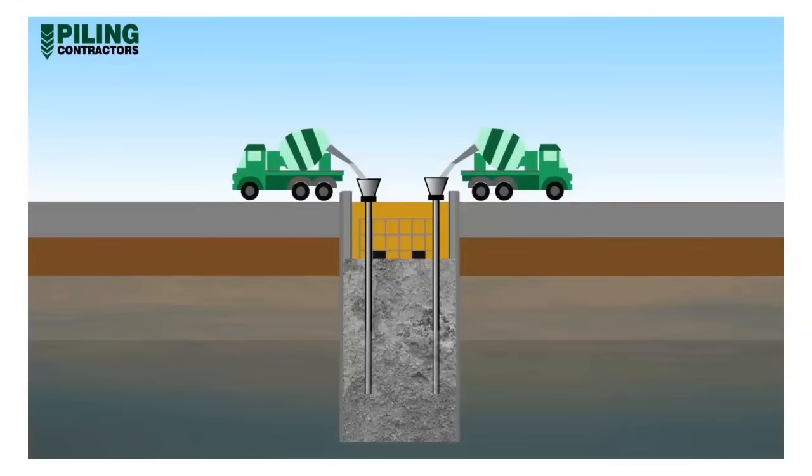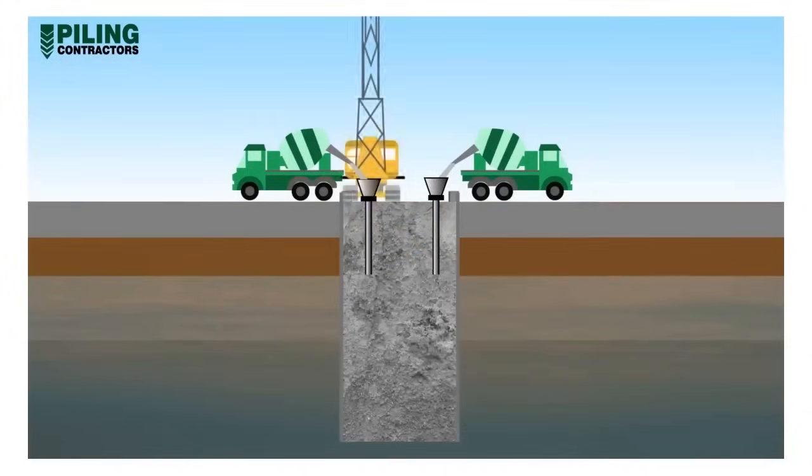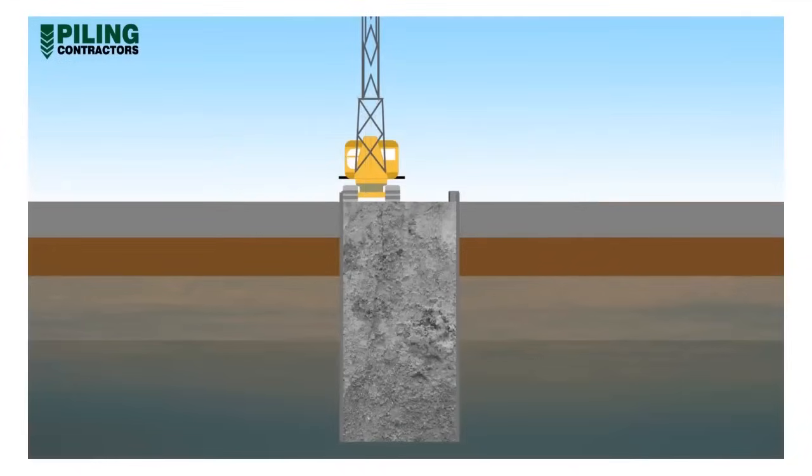As the concrete level rises in the panel, the Tremi tube lengths are shortened to ensure that fresh concrete is always closest to the concrete-bentonite interface. When the concrete rises to the required level, the Tremi pipes are removed and the concrete is allowed to set.